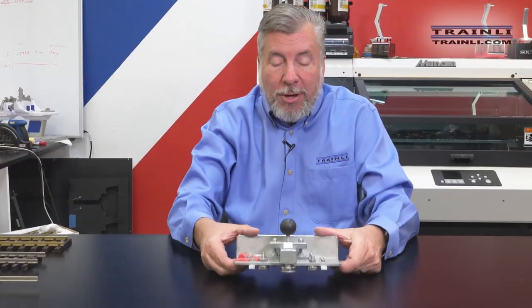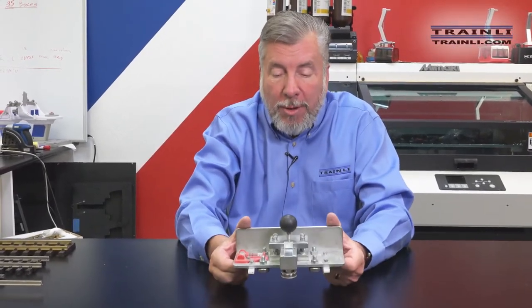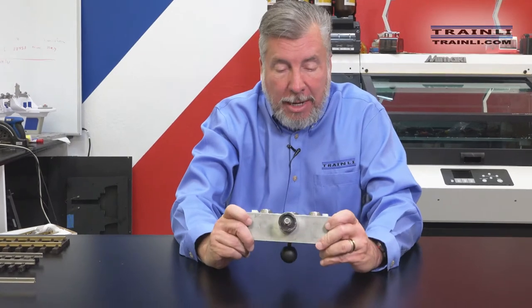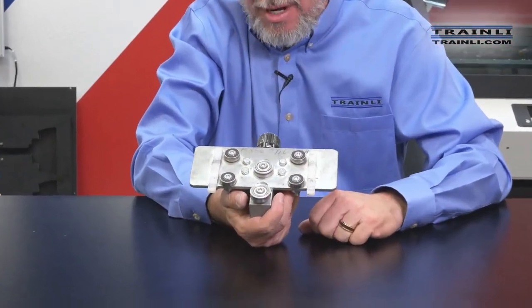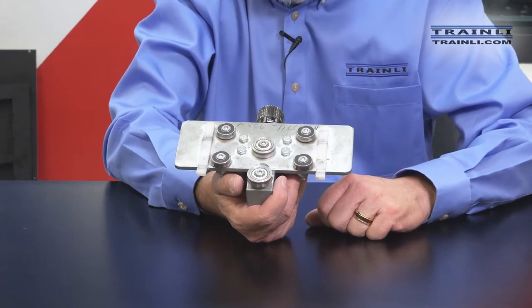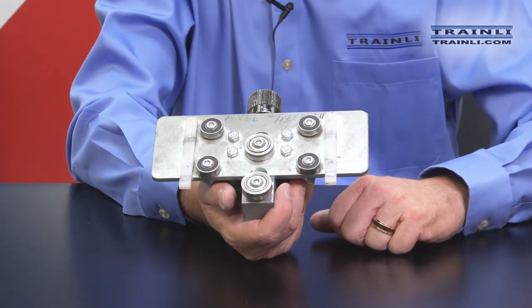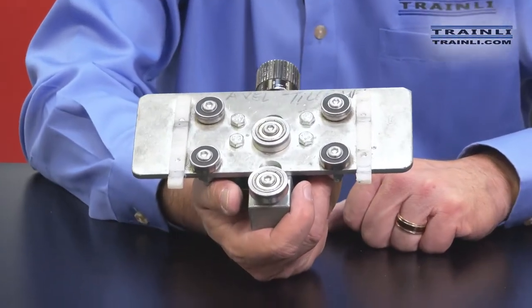So, this railbender here is one of the original railbenders, and matter of fact, it still has Axel's name on it, and this one's almost at least 15 years old, and we've been using this on a regular basis in all different types of conditions.